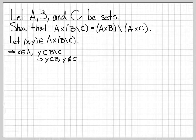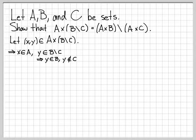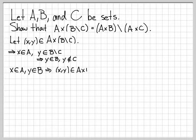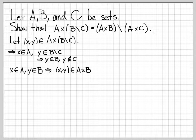What does it mean for y to be an element of B difference C? That means that y is in B and y is not in C. So at this point we've established that for an arbitrary element in the left-hand set, x is in A, y is in B, and y is not in C. So if x is in A and y is in B, that means the tuple (x, y) is in the Cartesian product of A and B. That's just how Cartesian products are defined: the first coordinate goes with the first set, the second coordinate goes with the second set.